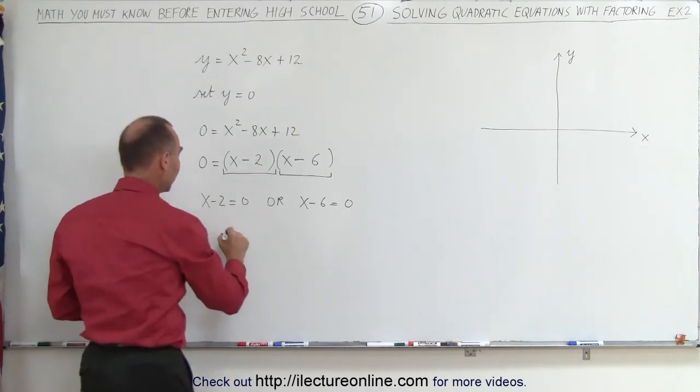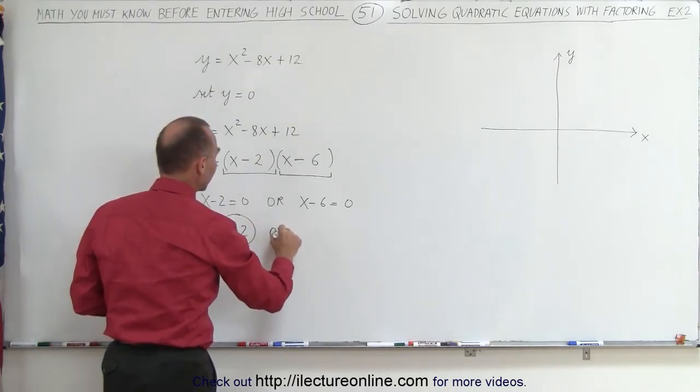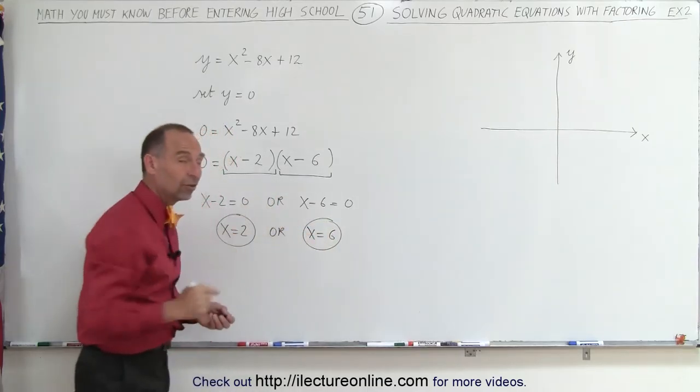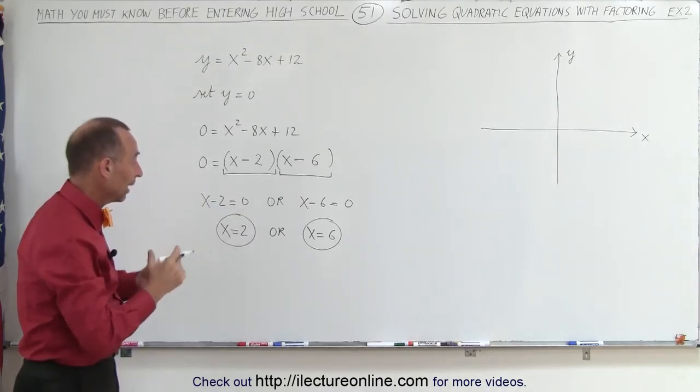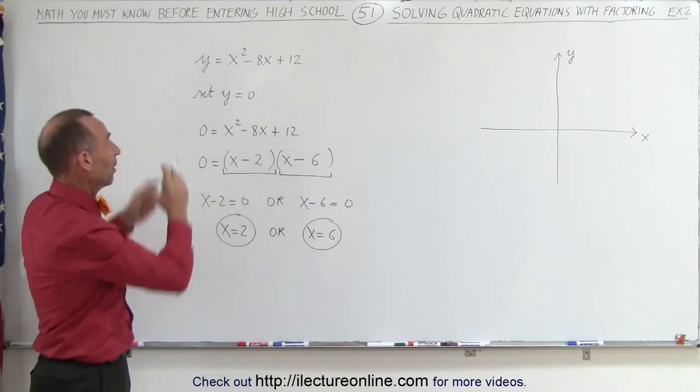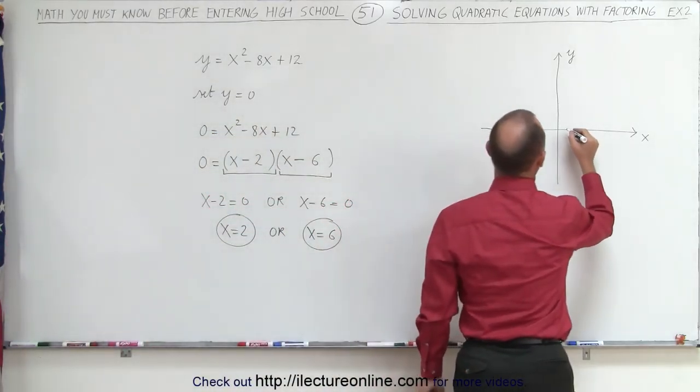That means in this case x must equal 2, or in this case x must equal 6. These end up being the two locations on the xy graph where the graph that represents that equation crosses the x-axis. So let's find the numbers.